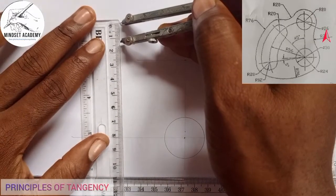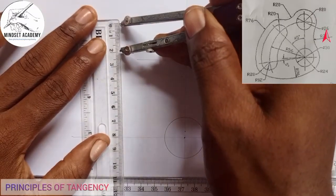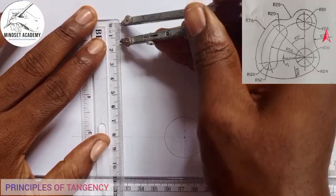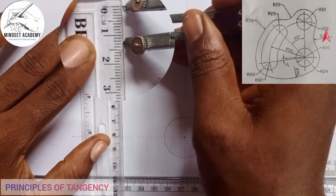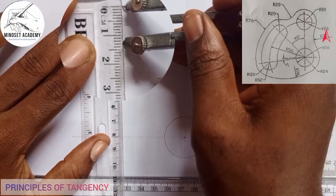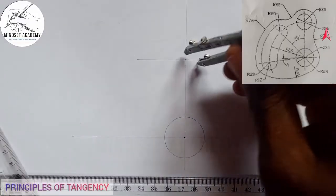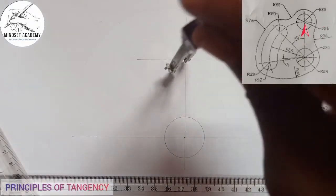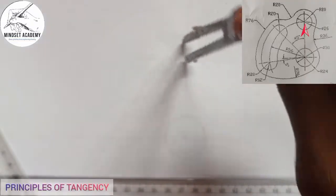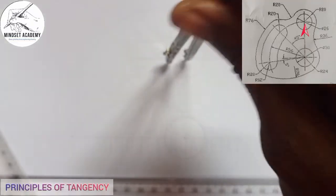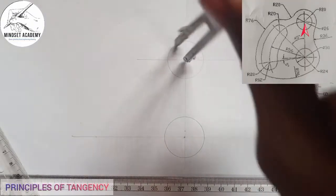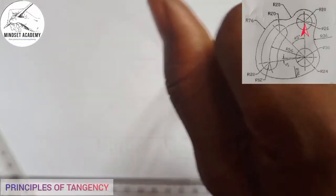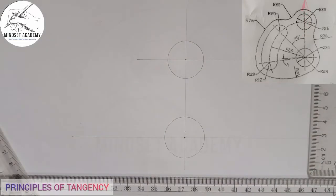That second circle has a diameter of 26, so I need a radius of 13 to draw it. I'll place my compass and measure 13. I'll place it at the center point and draw the circle. Now we have two circles.